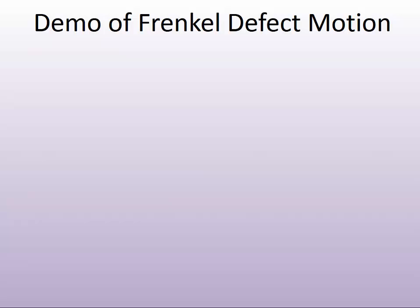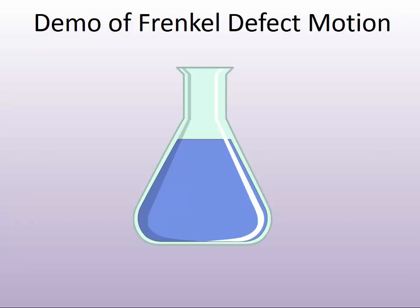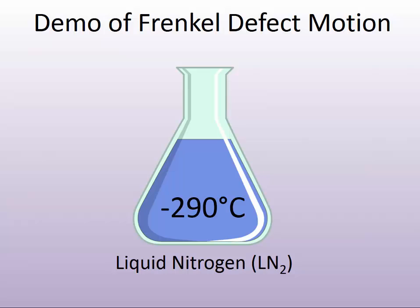I used to have a laboratory in the technical photographic chemistry class I taught at RIT, where I would demonstrate this Frenkel defect motion by having students expose film to light in a very unnatural way. I would have them pour liquid nitrogen into a beaker — temperatures that reach down to about minus 290 degrees Celsius, which is extremely cold.